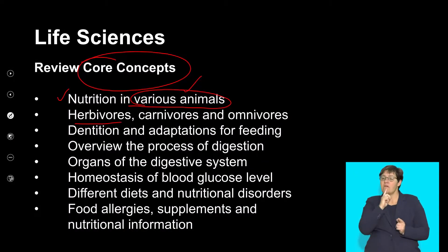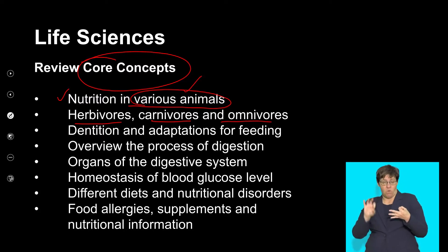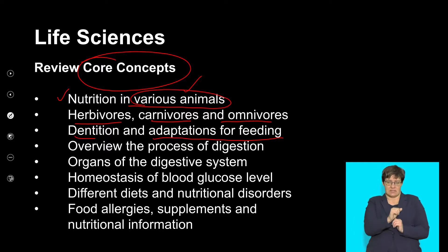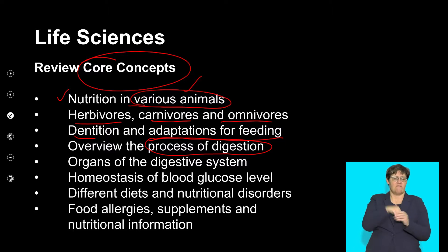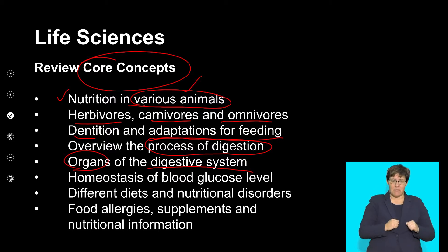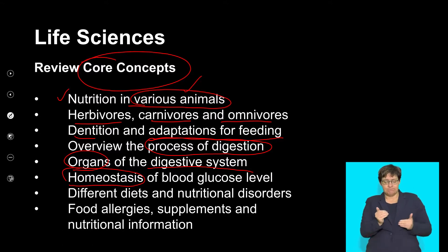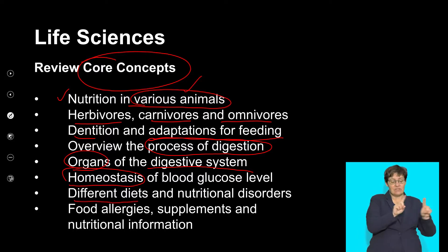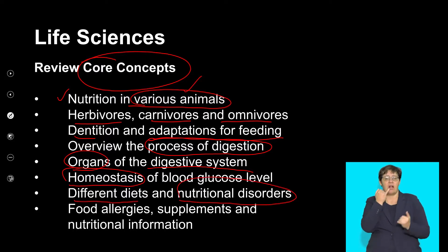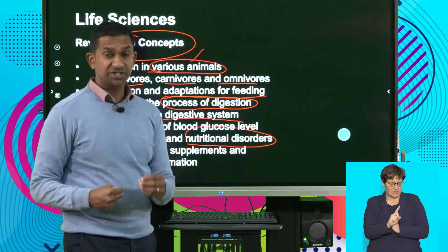We mentioned the terms herbivores, carnivores, and omnivores and looked at their diet. We also spoke about dentition and the adaptation for feeding. It's important that we overview the process of digestion and the different stages involved. We will have a look at the organs of the digestive system and understand how to label them and describe their functions.